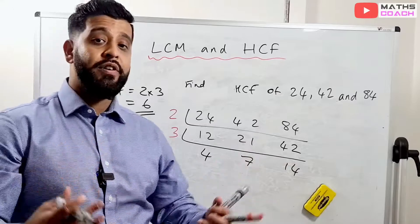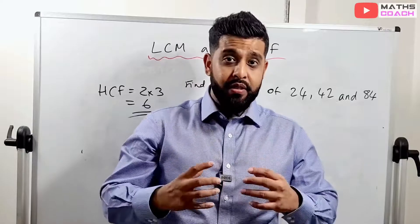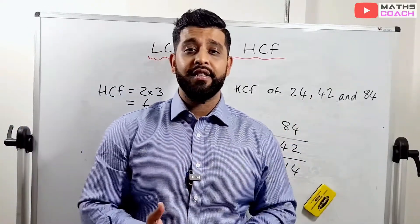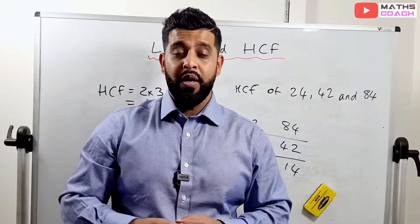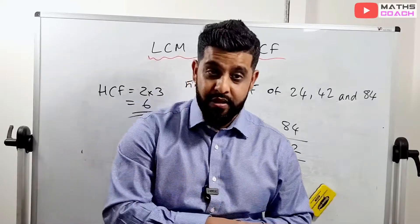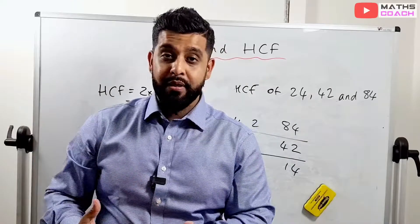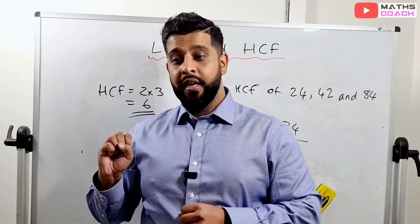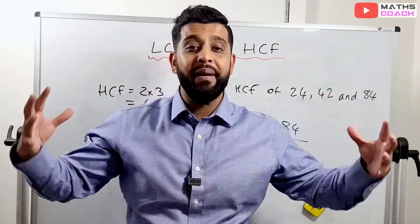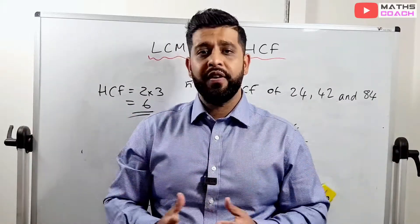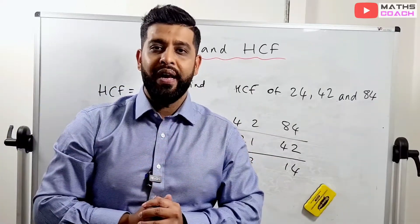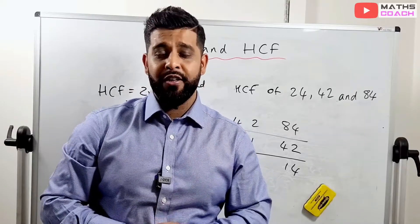If asked for the LCM instead, just multiply all the numbers together — though this will give a very large number. Exam questions may be straightforward or in sentence form, for example: two Christmas lights blink every 4 seconds and 6 seconds respectively — when do they next blink together? That's finding the LCM of 4 and 6. The principle is the same. Using this technique you can find both LCM and HCF. Goodbye for now — please share with your friends and family.